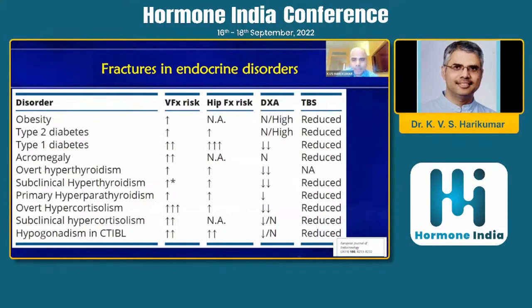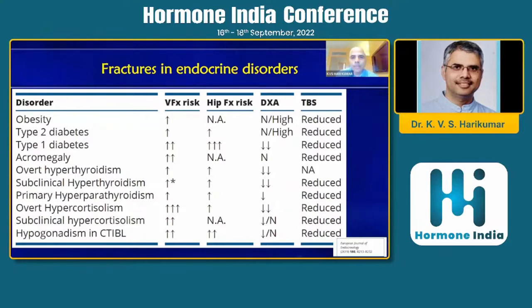This is the spectrum of fracture risk in different endocrine disorders. Most of the time the vertebral fracture risk is more. An important point is that DEXA may be normal or high but still the fracture risk is elevated. This is most important to understand — your DEXA may not be affected, especially in diabetes, whereas in others there may be reduction in T-score. DEXA normality does not preclude the patient from having a fracture because of an underlying endocrine disorder.